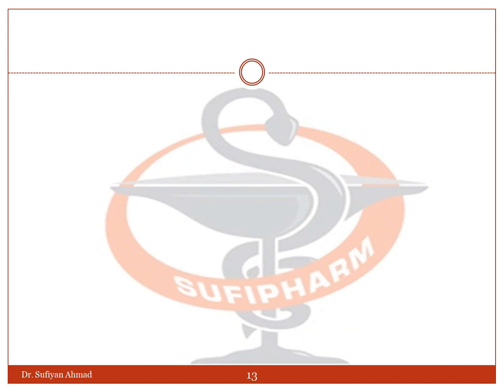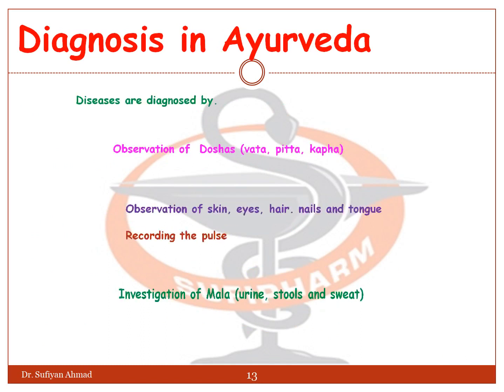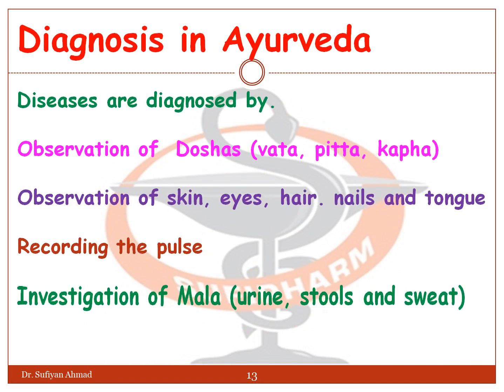The diagnosis in Ayurveda: diseases are diagnosed by observation of doshas (Vata, Pitta, Kapha), observation of skin, eyes, ear, nail, and tongue, recording the pulse, and investigation of Mala means urine, stool, and sweat.